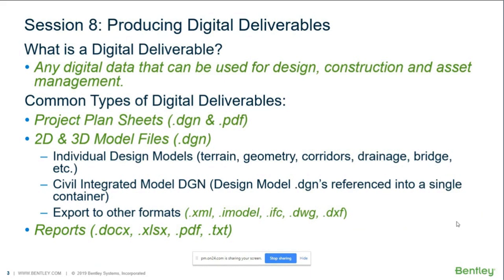Plan sheets are often printed out to PDF format — Adobe's file format — and those are the two main ones used pretty much universally in our industry. We also have 2D and 3D model files: individual Open Roads Designer model files including terrains, geometry, corridors, drainage, bridge, and all those DGN files. You may also have what we call a civil integrated model design file — a collection of all the individual design files referenced into a single container that acts as your project file.